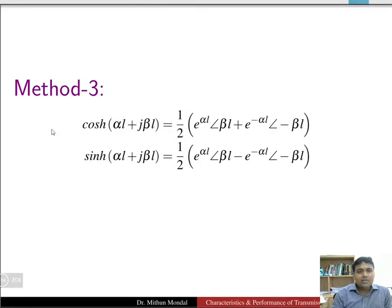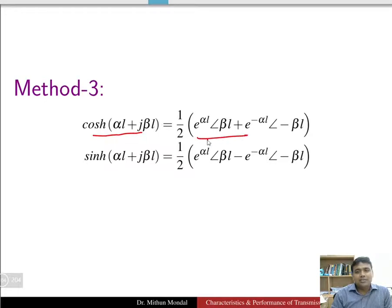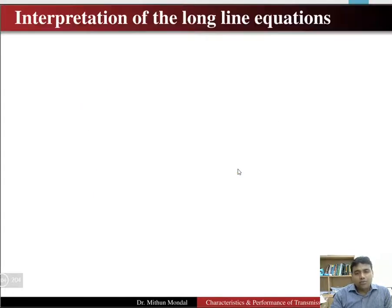Method 3 writes cosh(αl + jβl) and sinh(αl + jβl) in exponential form, which is again independent of complex notation.